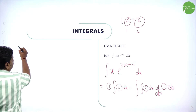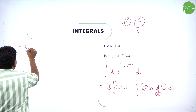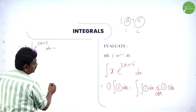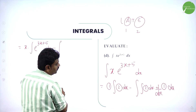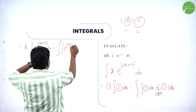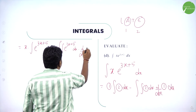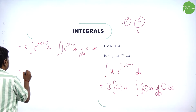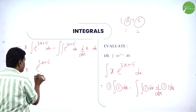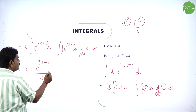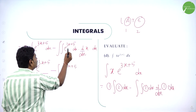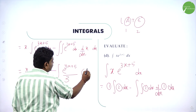That is: x into integration of e^(3x+5) dx, minus integration of e^(3x+5) dx into derivative of x with respect to x. You know integration of e^(ax+b) is e^(ax+b) divided by the coefficient of x. What is the coefficient of x? It is 3. So integration of e^(3x+5) is e^(3x+5)/3.